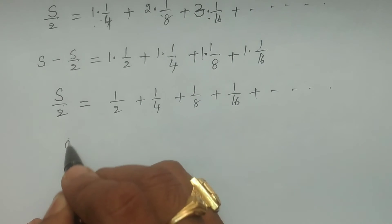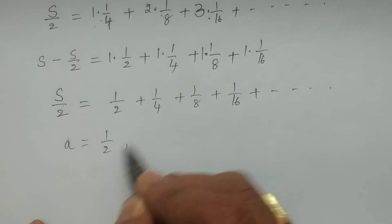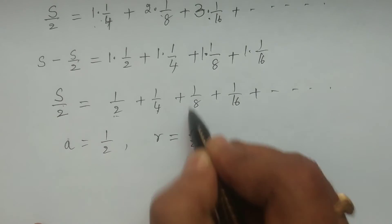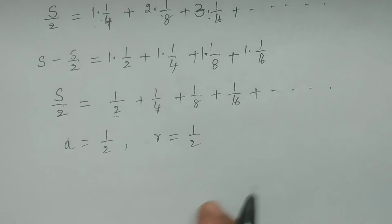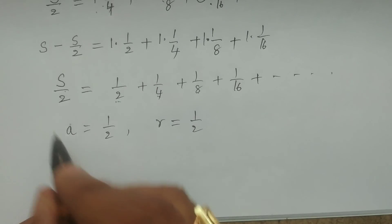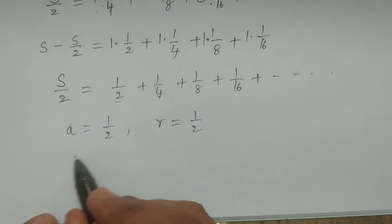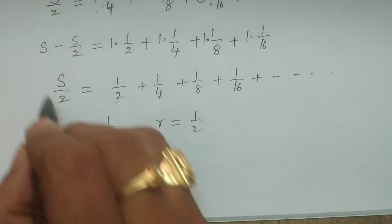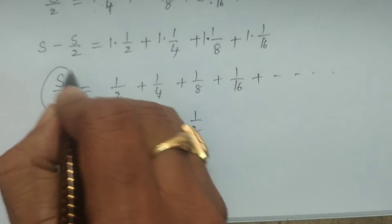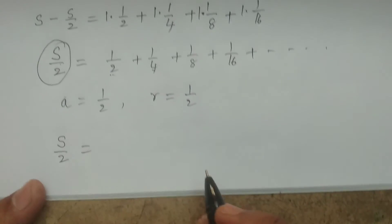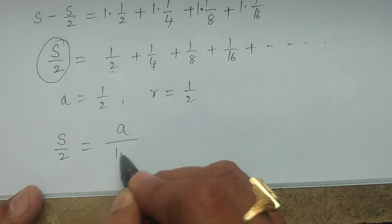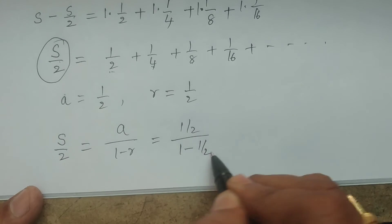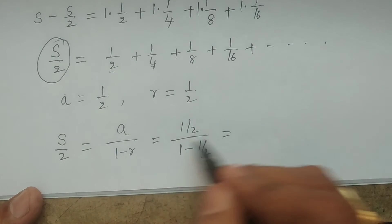The first term A = 1/2 and the common ratio R = (1/4)/(1/2) = 1/2. The sum of this infinite geometric series is A/(1−R) = (1/2)/(1 − 1/2) = (1/2)/(1/2) = 1.